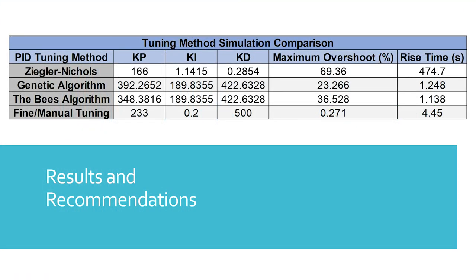The quantitative results lead to the conclusion that the most optimal choice for controlling the sway of the load is the fine-slash-manually-tuned method. It exhibited the lowest maximum overshoot at a mere 0.271% and a reasonable rise time of 4.45 seconds.